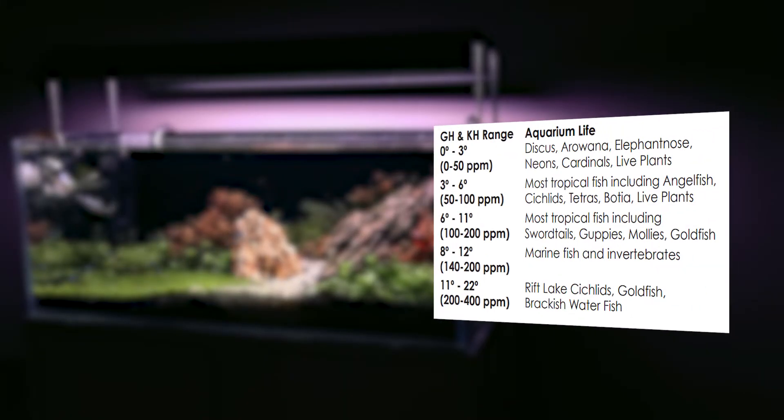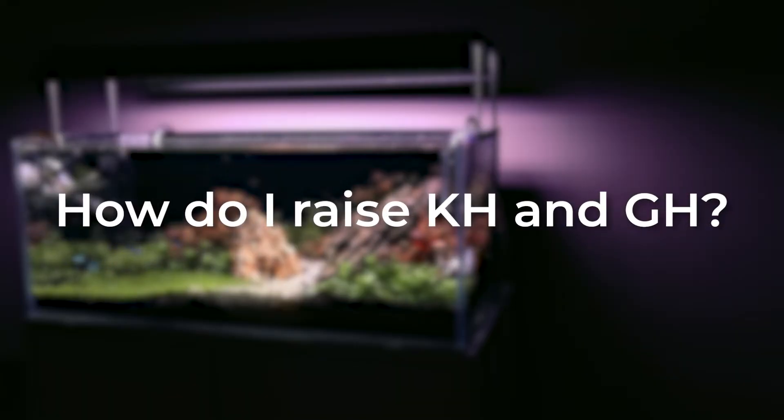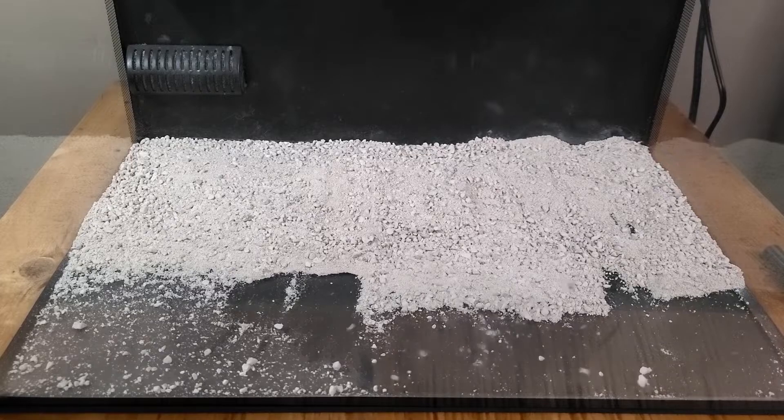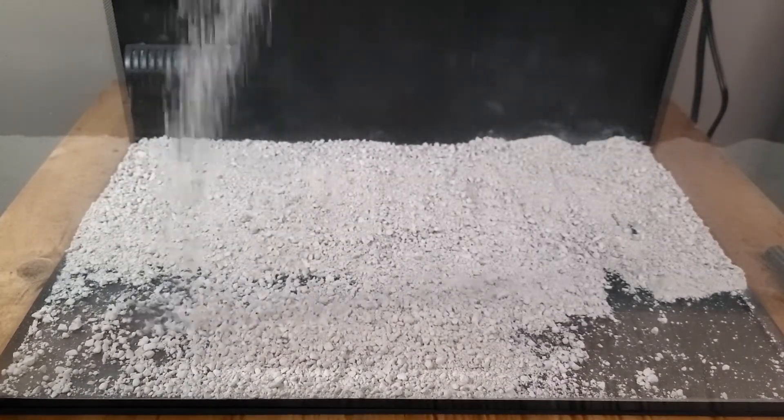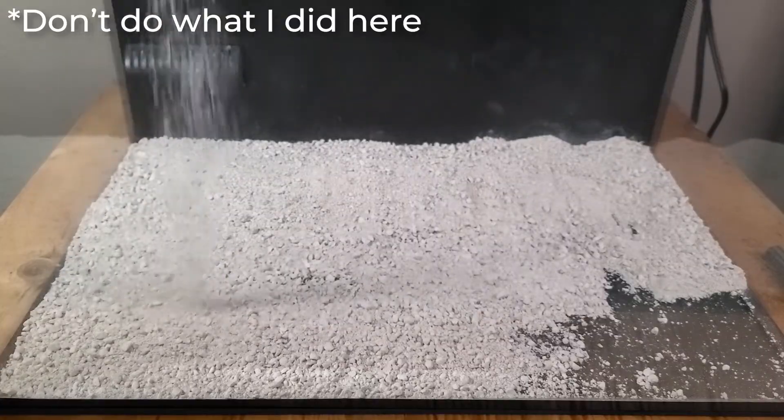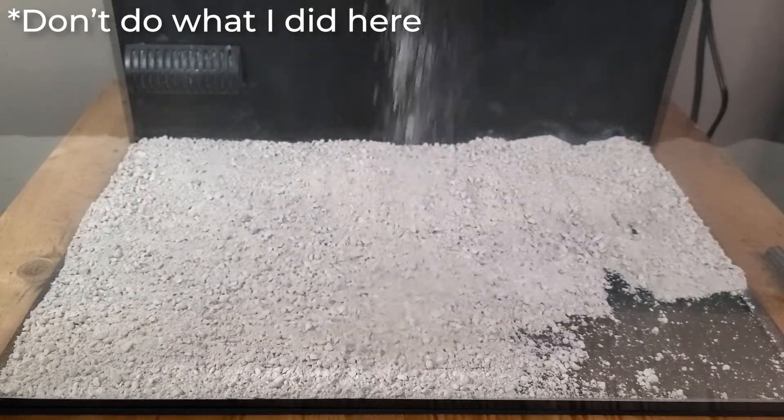Furthermore, distinct species of fish have different GH requirements. For example, live bearers and cichlids prefer a higher GH, while discus and tetras prefer a lower GH. Now, if you want to raise your KH and GH to harden the water, consider adding some crushed coral, aragonite, or even limestone to your filter. I recommend not adding it to the substrate, just in case you want to remove it in the future.